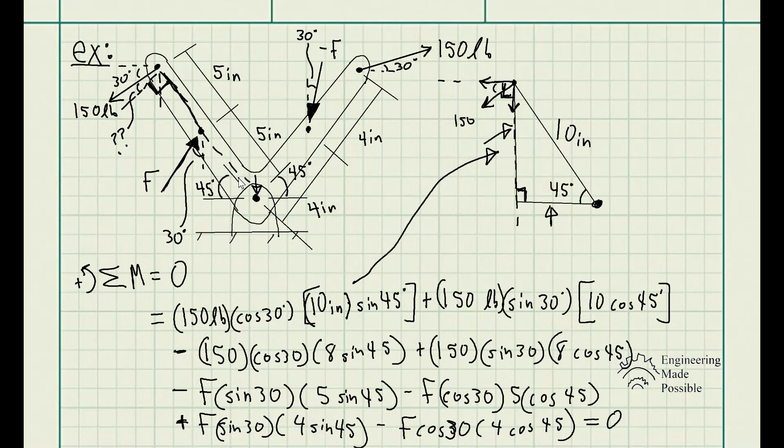This is how you apply the concepts of moments and the summation of the resultant moment to find unknowns in a system. In this specific problem, we solved for the force F such that there was no net moment about the hinge. We'll see you next time.